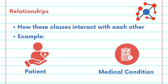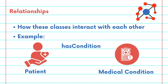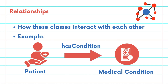Relationships are how these classes interact with each other. For example, has condition is used to describe a specific aspect of the patient class. It establishes a connection between a patient and the conditions that they are diagnosed with, which is important for managing and querying patient information.